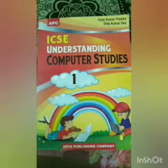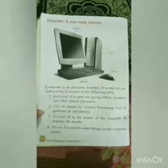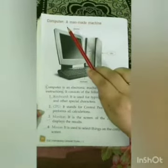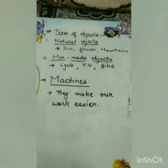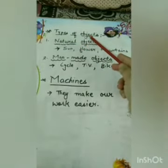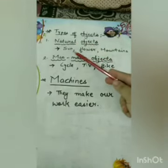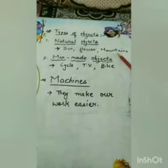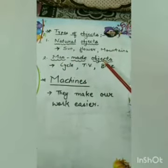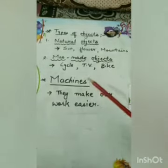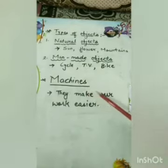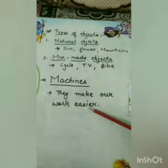This is your computer book, open page number 40. Today we are going to study about the computer or man-made machine. But before this, I would like to recall what we studied in our previous video. We studied about types of objects: natural objects like sun, flowers, mountains, which are made by God; and man-made objects like cycle, TV, bike, which are made by men. We also studied about machines — machines make our work easier. Computer is also a machine.